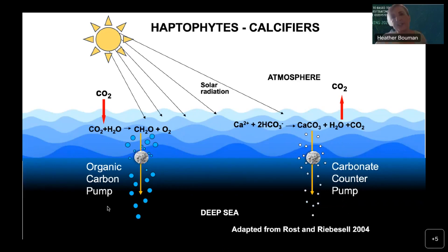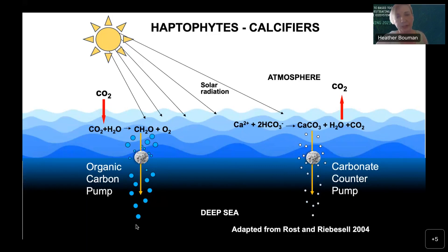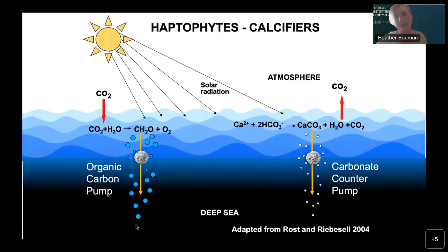Why we're interested in detecting calcifiers is that they play two roles in the carbon cycle. Like all phytoplankton, they take up CO2 through photosynthesis and some of that fixed carbon sinks to greater depths — also because the coccoliths themselves make the cells very negatively buoyant. The other reason is that calcification actually results in the production of carbon dioxide in the surface ocean. So the calcification process can be a source of CO2. Whether these coccolithophores are actively calcifying, whether they're sinking or remaining in the surface ocean, will dictate whether the phytoplankton blooms are a source or a sink of CO2.